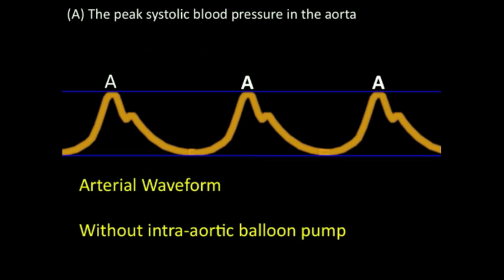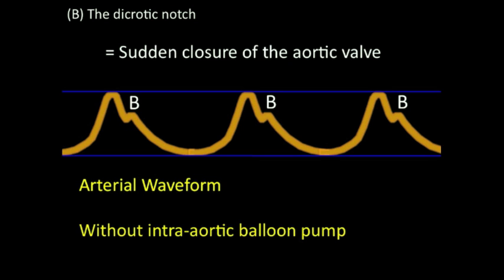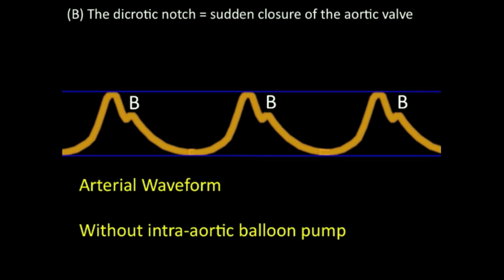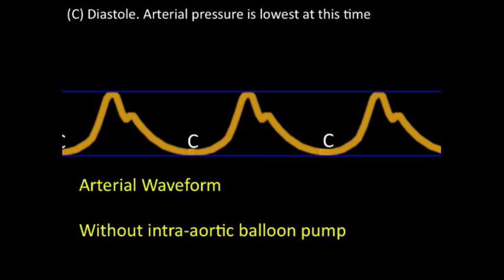Letter A denotes the peak systolic pressure in the aorta — about 120 millimeters of mercury in the average adult, though not so much the case in cardiogenic shock. Next is the dicrotic notch, which represents sudden closure of the aortic valve. Blood in the aorta wants to flow retrograde back into the left ventricle, but the aortic valve prevents that by closing. That blood rebounds off the valve and goes forward again, giving you the dicrotic notch — a momentary elevated rebound in pressure, often called a sawtooth pattern. Letter C represents diastole when the heart is relaxing, so the waveform is at its lowest point — about 80 in a normal adult, quite a bit lower in cardiogenic shock.